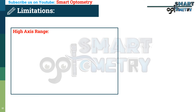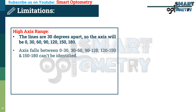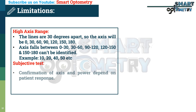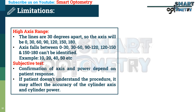Limitations of the clock dial chart: First, high axis range — the lines are 30 degrees apart, so only axes of 0, 30, 60, 90, 120, 150, and 180 degrees can be identified. Axes falling between these values, such as 10, 20, 40, or 50 degrees, cannot be identified. Second, it is a subjective test — confirmation of axis and power depends on patient response. If the patient does not understand the procedure, it may affect the accuracy of the cylinder axis and power.